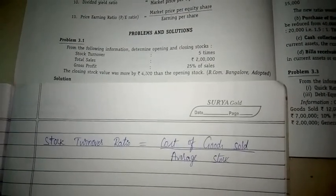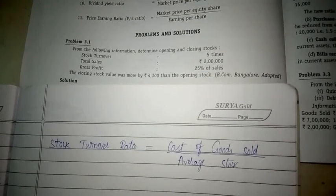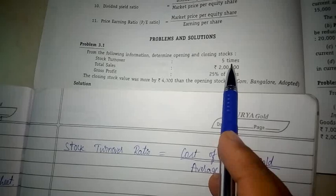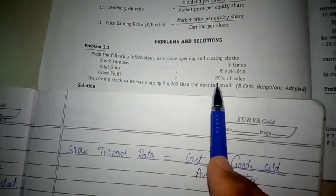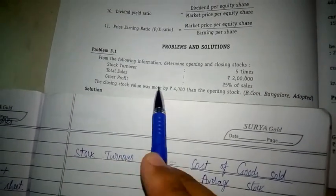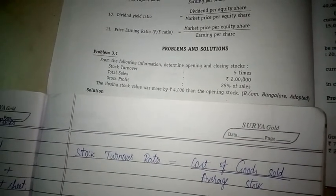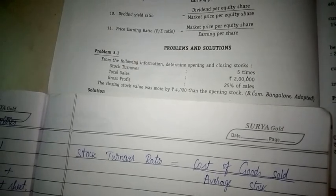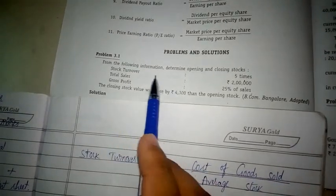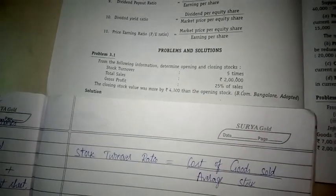Hello students. In this video, let us understand how to calculate opening stock and closing stock using the stock turnover ratio. In this problem, they have given the stock turnover ratio, total sales, gross profit as 25% of sales, and they have stated that the closing stock value was more by 4,000 rupees than the opening stock.